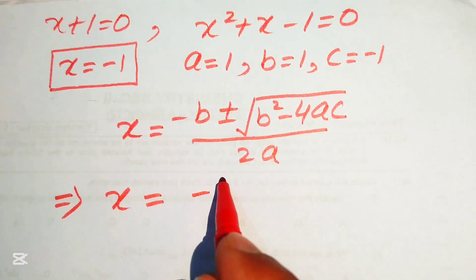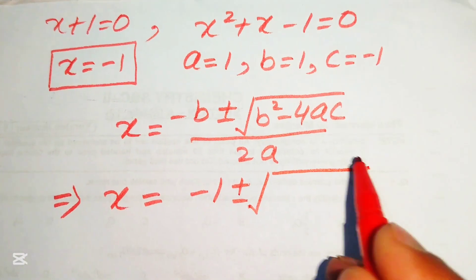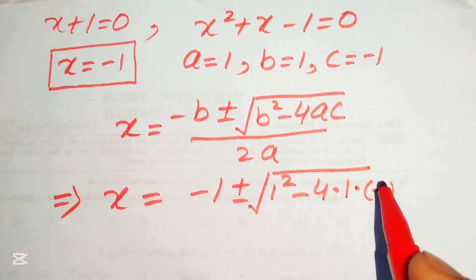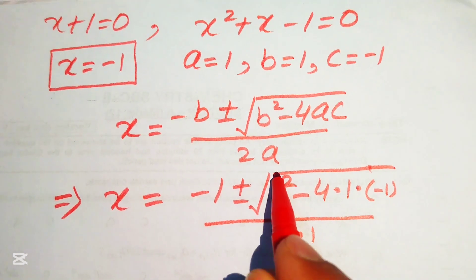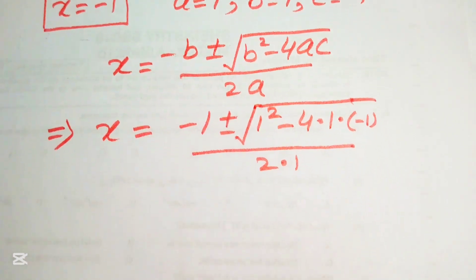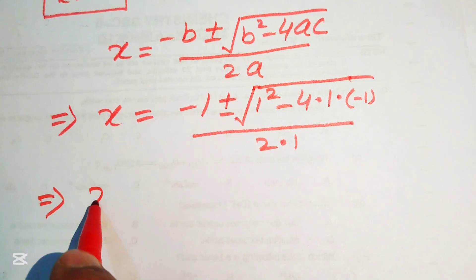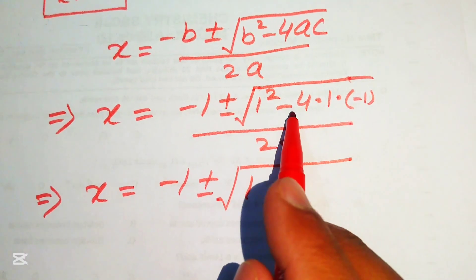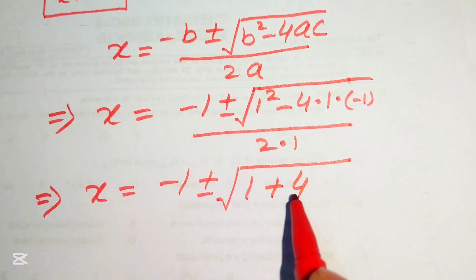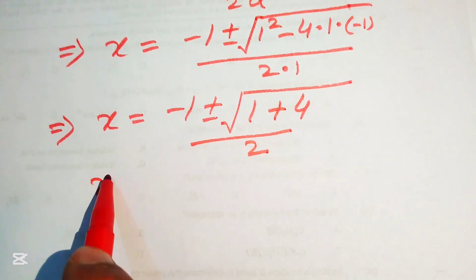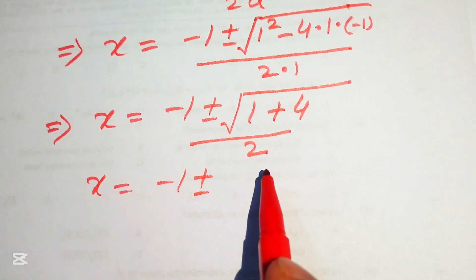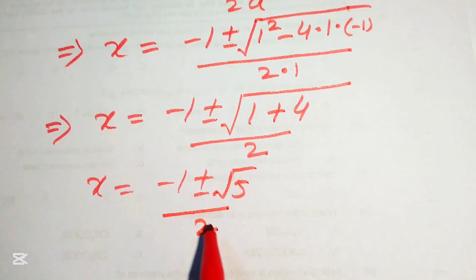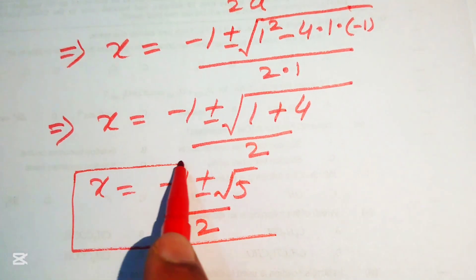Substituting: x = (-1 ± √(1² - 4·1·(-1))) / (2·1) = (-1 ± √(1 + 4)) / 2 = (-1 ± √5) / 2. So the other two roots of the equation are x = (-1 + √5)/2 and x = (-1 - √5)/2.